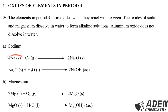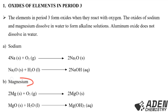Sodium reacts with oxygen to give us sodium oxide, then sodium oxide dissolves in water to form sodium hydroxide. Remember learners: when a metal reacts with oxygen we get a metal oxide, and when metal oxide is dissolved in water we form a metal hydroxide. We are now done with sodium, so we go to part b - magnesium.